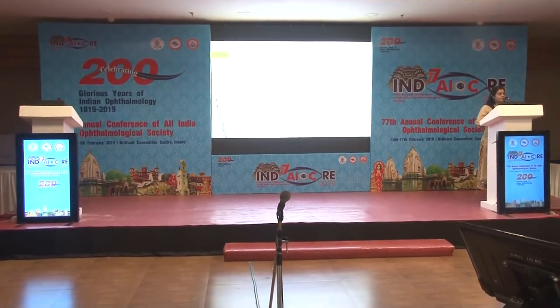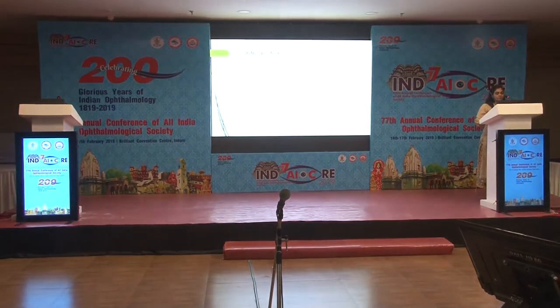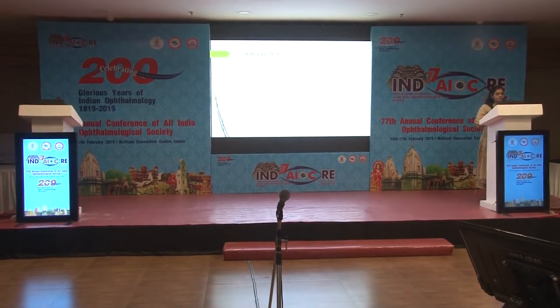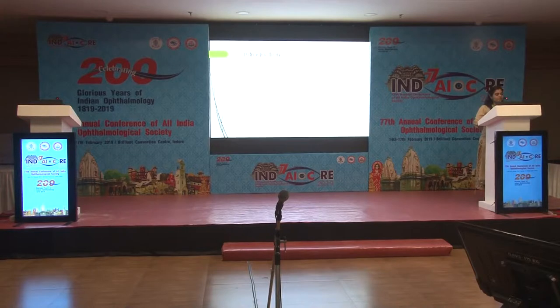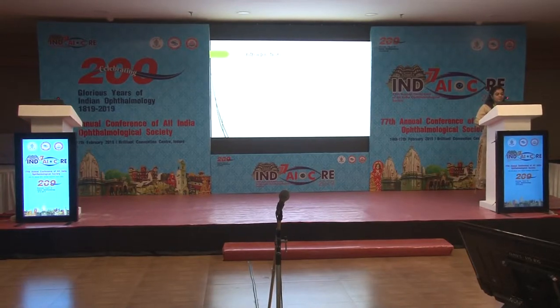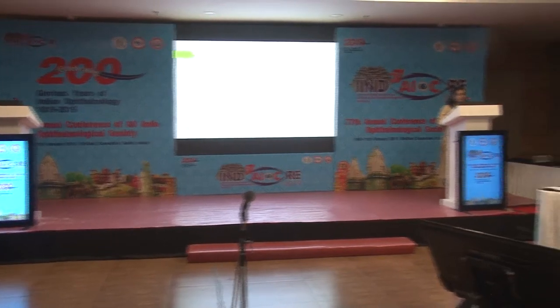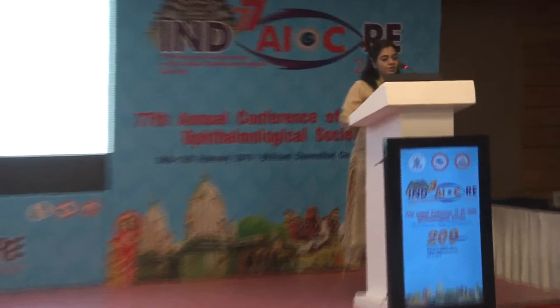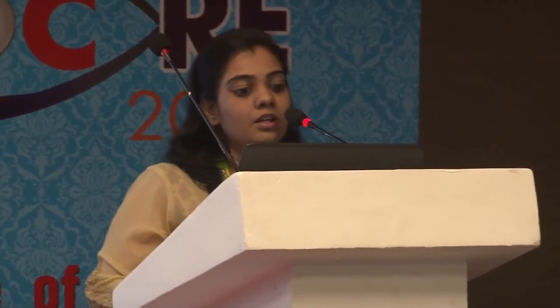Idiopathic infantile nystagmus is a disorder of unknown etiology. It's characterized by presentation in infancy producing horizontal jerky oscillations of the eye. This usually leads to the adoption of an anomalous head posture so as to increase the visual function, because of the presence of an eccentric null zone — the zone in which there is minimal nystagmus intensity. Multiple surgical and non-surgical treatments have been tried for the same.